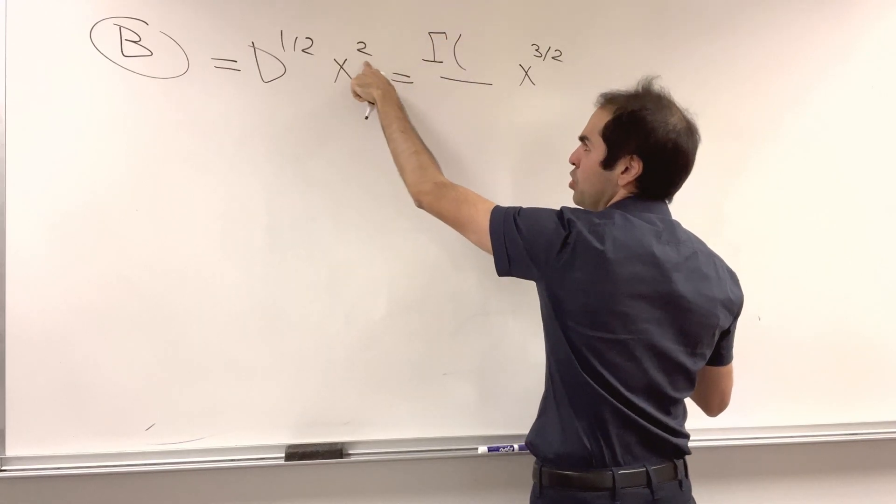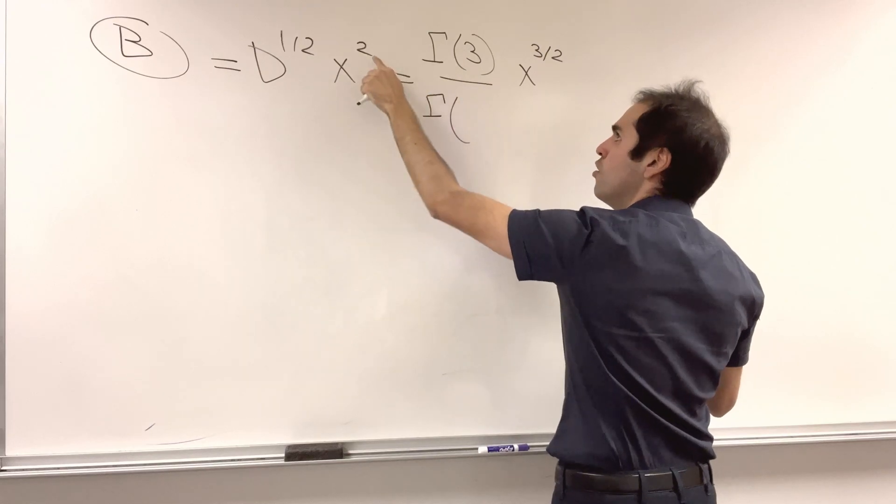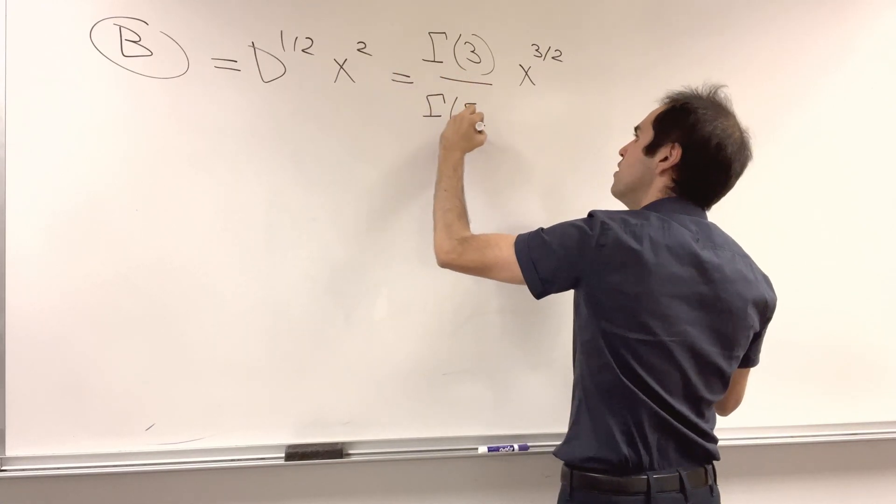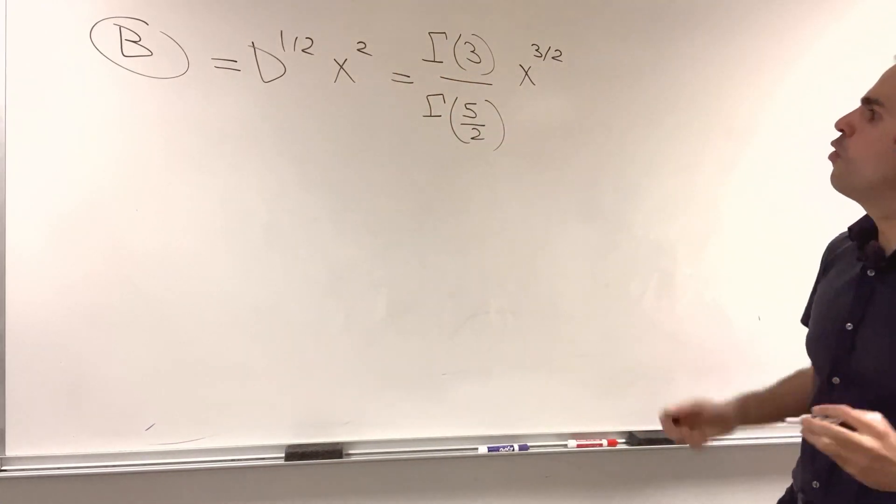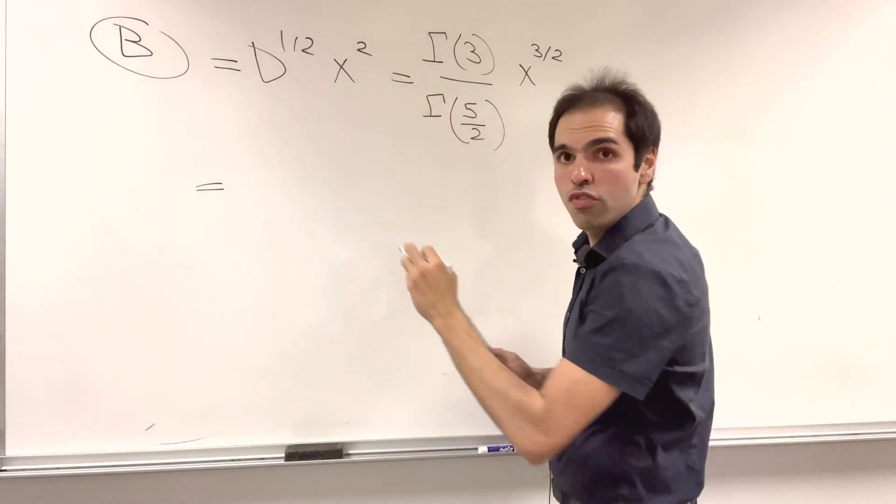So here is gamma(2 + 1) over gamma(2 + 1/2). So gamma(3) over gamma(5/2), but gamma(3) is just 2 factorial.